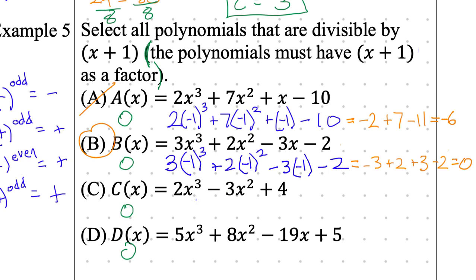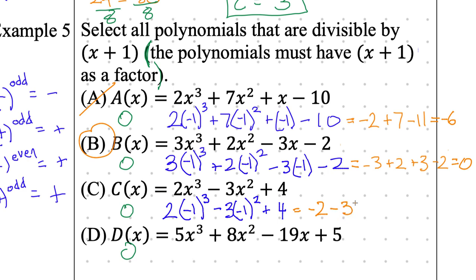For polynomial C, I'm plugging in negative 1 again. Negative 1 to the power of 3 is negative 1, times 2 is negative 2. Negative 1 squared is 1, times negative 3 is negative 3. Negative 2 minus 3 is negative 5, plus 4 is negative 1. So it's not C.